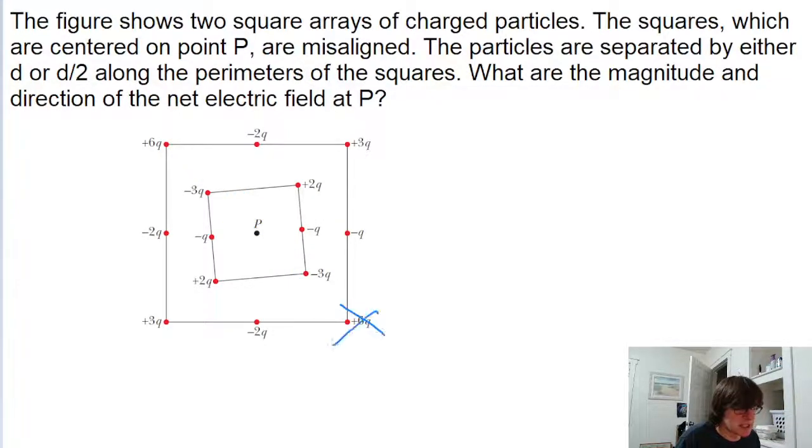So we can basically just ignore these two charges entirely, and now we have two fewer charges to worry about. Let's go through every charge on this diagram, look for pairs of charges like that, and cancel them out.